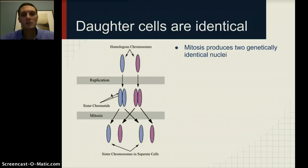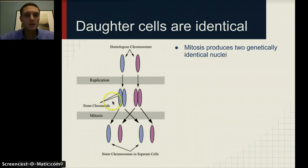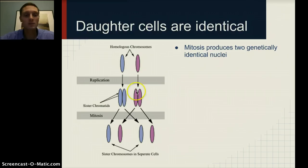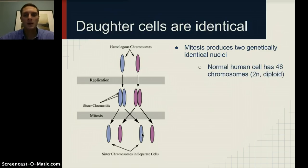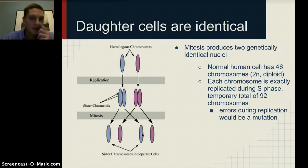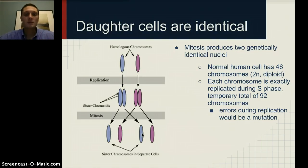In human cells we normally have 46 chromosomes. For a short period of time, when the replicated chromosomes are all in a single cell, there are 92 chromosomes. When mitosis and cell division are completed, each cell has 46 chromosomes — so we begin with 46 and end with 46. A normal cell with 46 chromosomes is referred to as diploid. Each chromosome is exactly replicated during S phase, yielding a temporary total of 92 chromosomes. If an error occurs during replication, that would be a mutation.